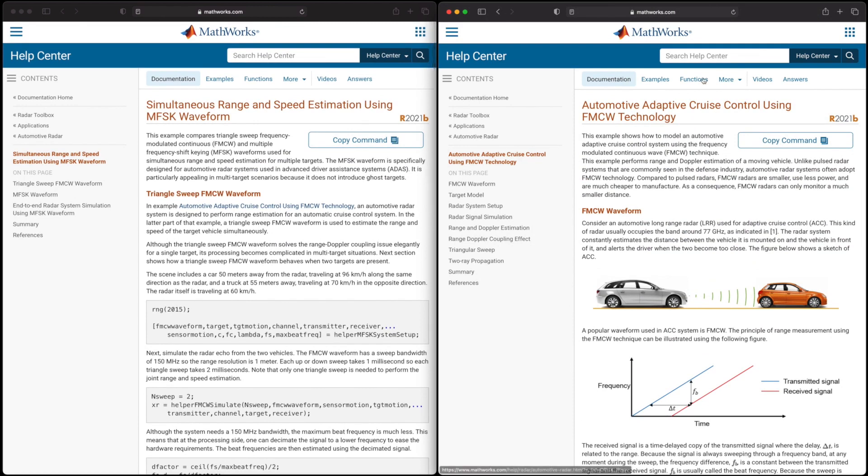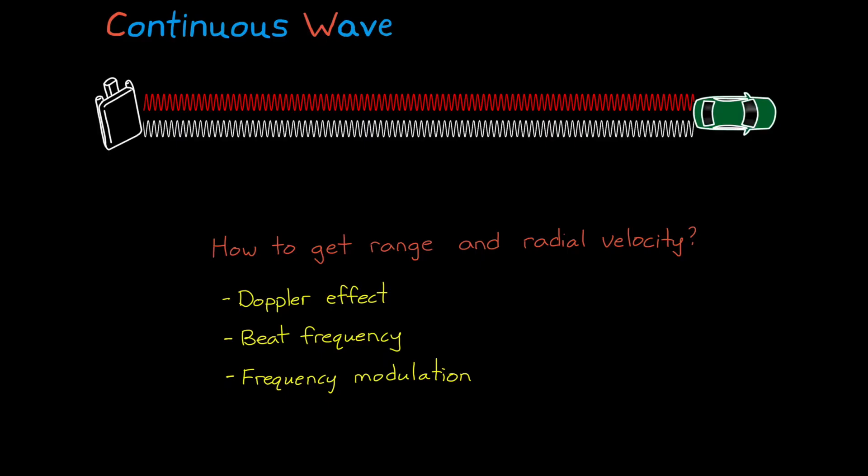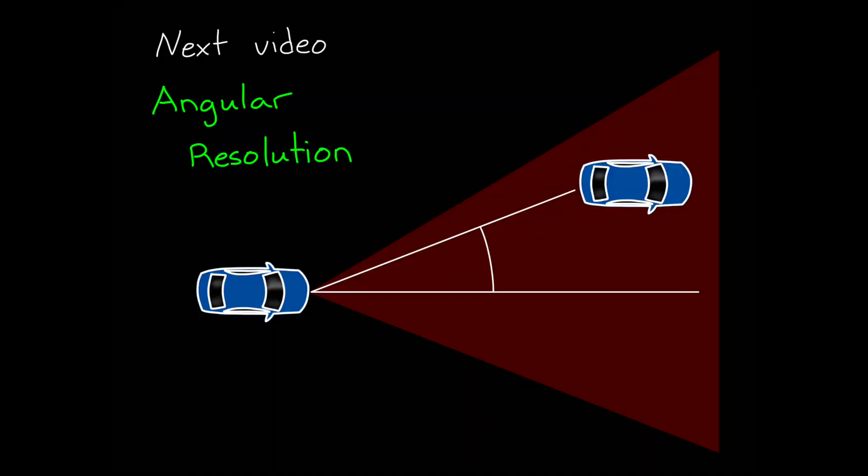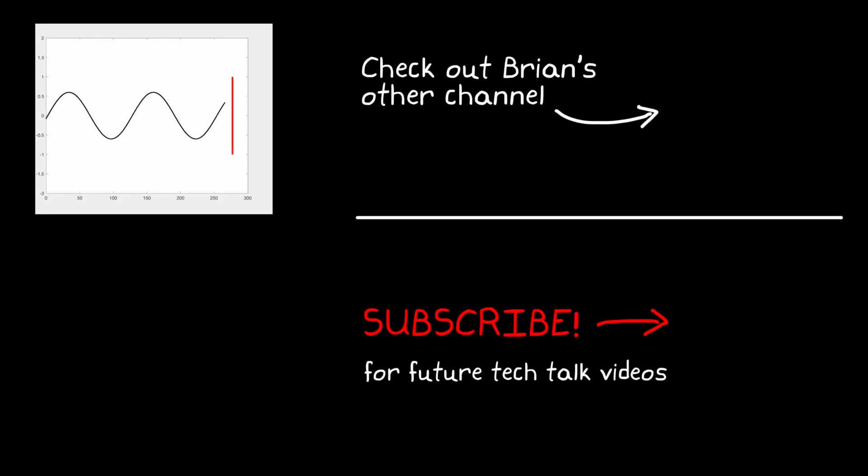All right, so that's where I'm going to leave this for now. In this video, we talked about measuring range and velocity of objects. However, for autonomous vehicle applications, we usually want to know more than just that. We also want to know the object's azimuth and elevation relative to the radar to get a sense of where it is in 3D space and to have an understanding of its size and shape. That's what we're going to talk about in the next video. So if you don't want to miss that or any other future Tech Talk videos, don't forget to subscribe to this channel. Thanks for watching, and I'll see you next time.